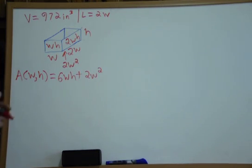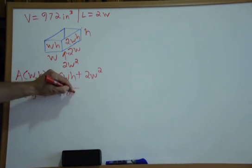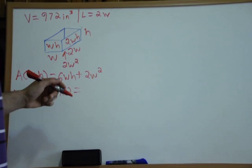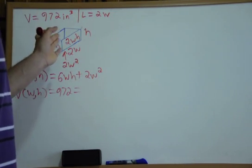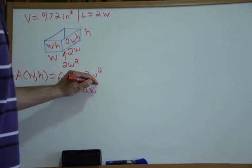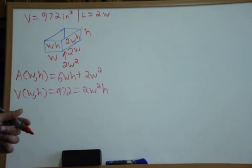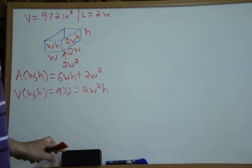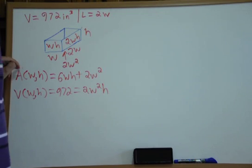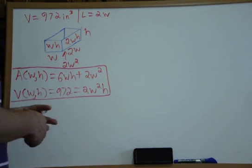Now we have to create our constraint function. The volume V equals 972, which equals length times width times height. The width is W, the length is 2W, so that's 2W squared, multiplied by the height H. So our constraint is 2W²H = 972. Now we have one function to optimize and one constraint.